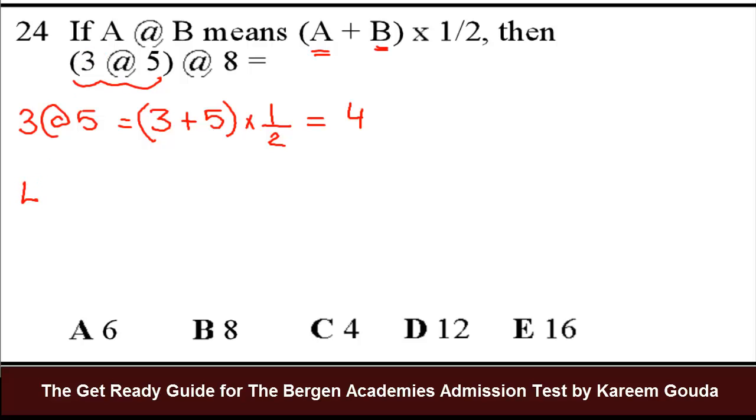So my new problem is 4, instead of this parentheses right here, at 8, which is right here, equals. The first one, A, which is 4, plus B, which is 8, in my case, times half. 4 plus 8 is 12. 12 times half is 6. So the answer will be 6A.